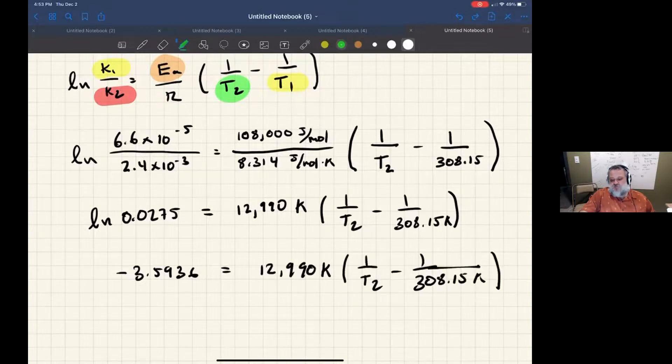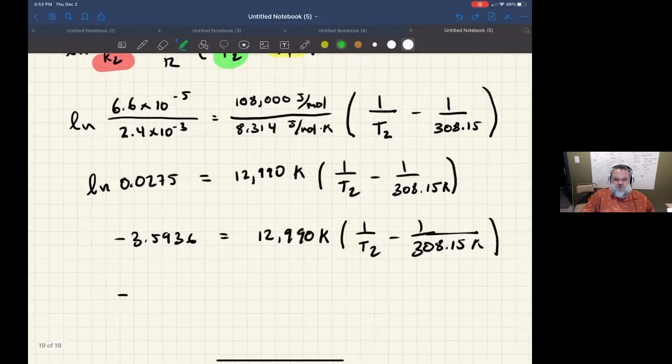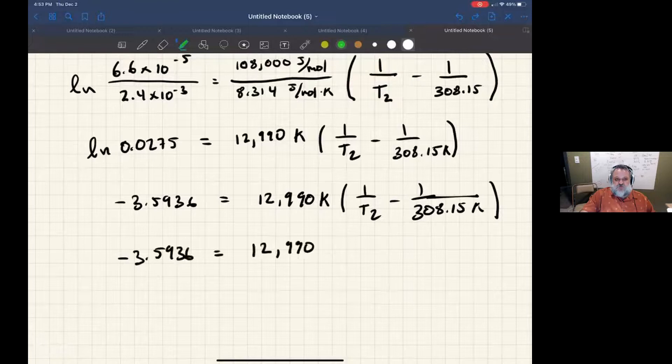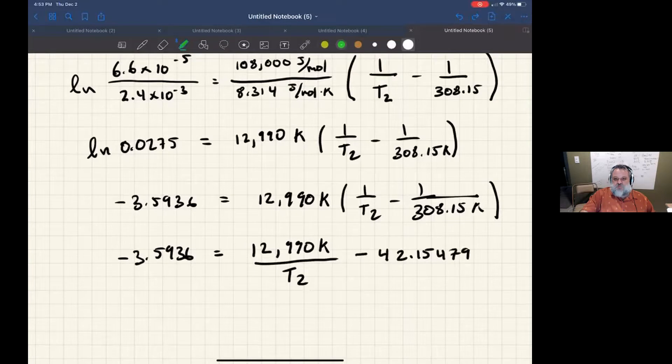Now let's go ahead and distribute the 12,990 K through the parentheses. So on the right side, I get 12,990 K over T2 minus 42.5479. And that number becomes unitless. And that's important because when we add 42.5479 to both sides, it needs to be unitless because the number on the left side is also unitless. So let's go ahead and do that.